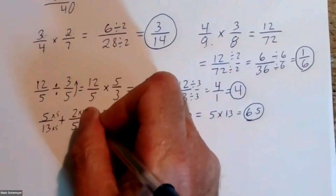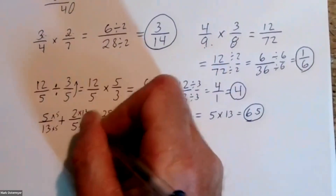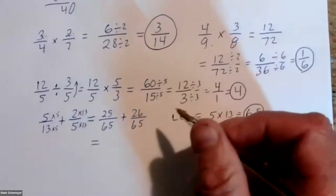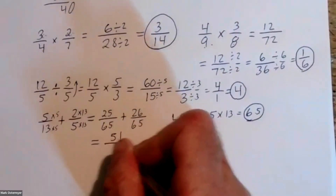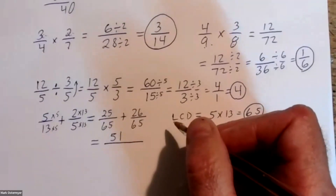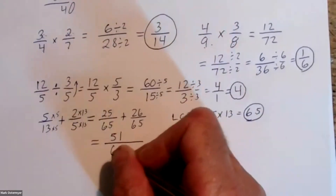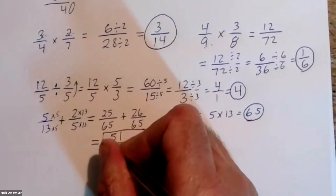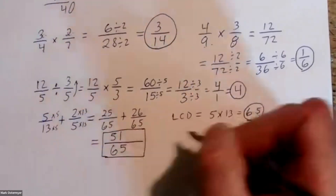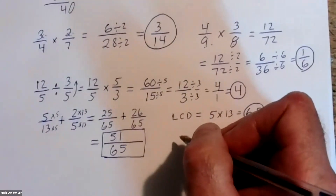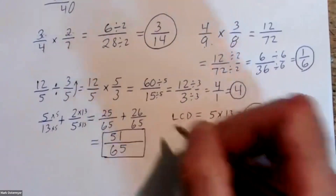Multiplying by five over five gives me twenty-five over sixty-five. This fraction has to be multiplied by thirteen over thirteen to build it up to twenty-six over sixty-five. Yes, so it's twenty-five plus twenty-six is fifty-one over sixty-five. I don't think we can reduce that anymore.